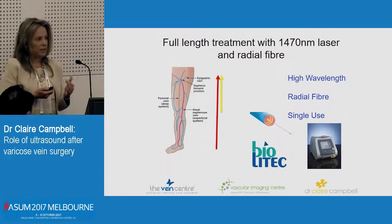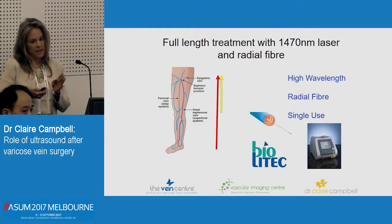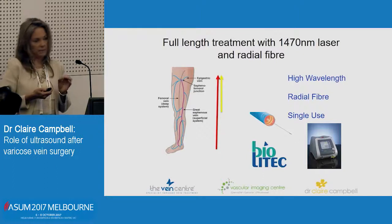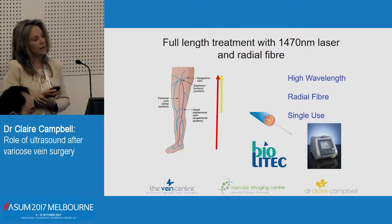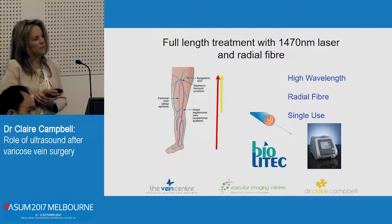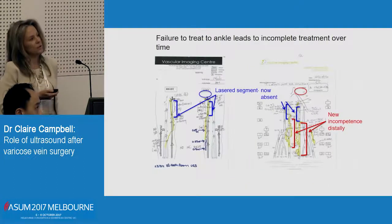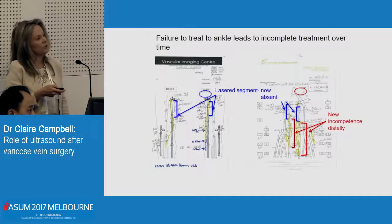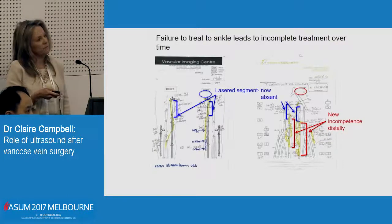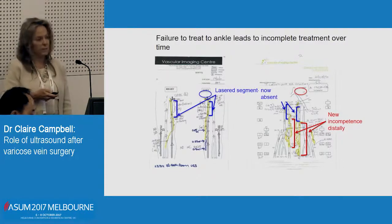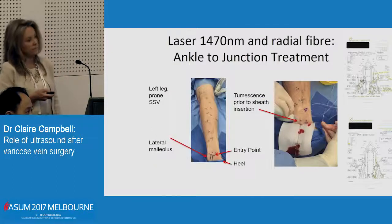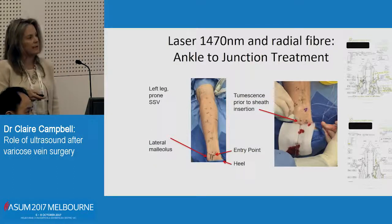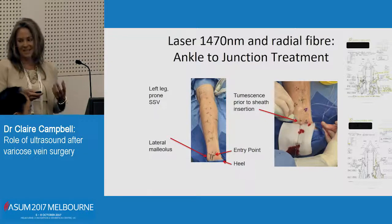I wanted to offer them laser treatment from the ankle up, which I was very nervous about for fear of nerve injury. But we did a prospective analysis and found that only one out of 170 veins had long-term numbness of a 50-cent coin size at the ankle, and that was at 12 months. So they do get some numbness, but it tends to go away. I tend to do ankle-to-groin or ankle-to-junction treatment for everyone. It's actually a really nice entry point down at the ankle because the vein's really big and easy to get into.